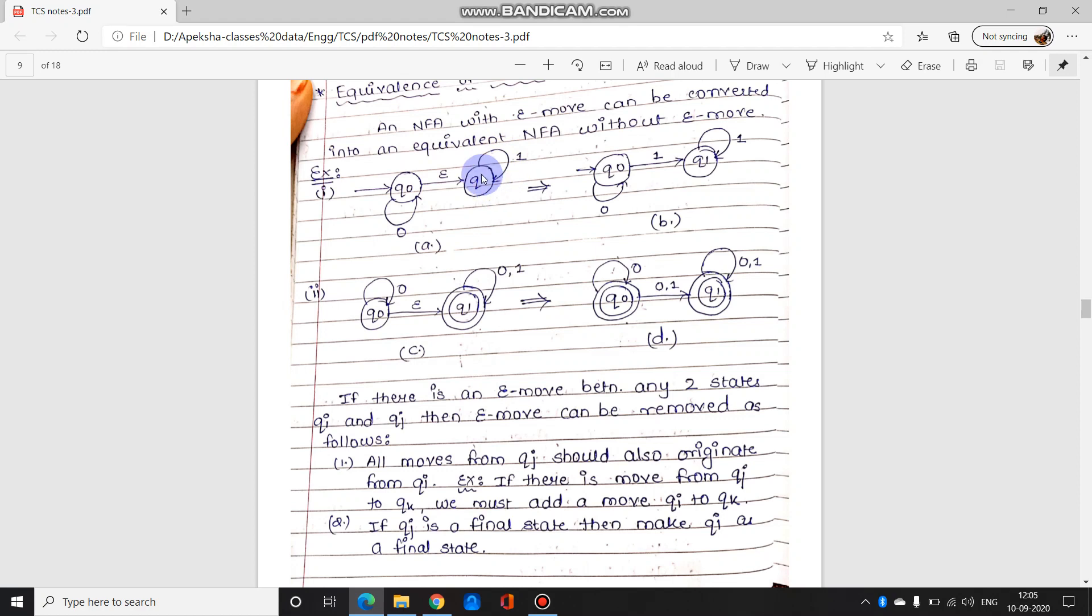In short, QJ ka jo bhi loops hai ya jo bhi transitions hai, usko hume duplicate karna hai QI pa. If there is a move from QJ to QK we must also add a move from QI to QK. So if you can see there is a self-loop, so QJ se ek self-loop hai, iske liye QI se QJ bhi ek input symbol 1 ke through transition hona chahiye. So jo epsilon transition hai that is replaced by 1, because we are duplicating the QJ ka move.